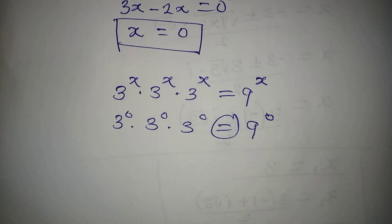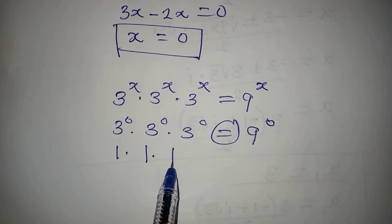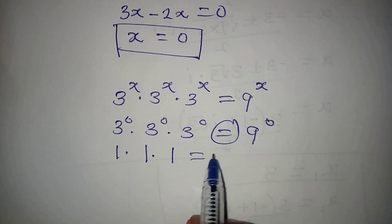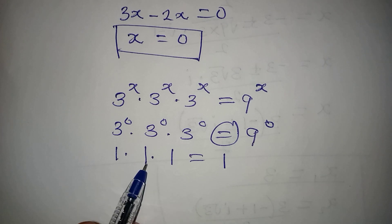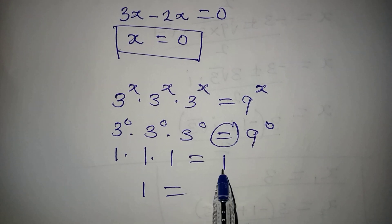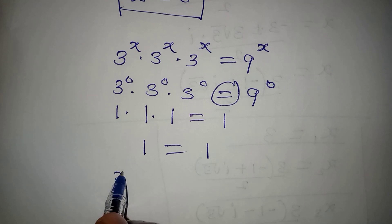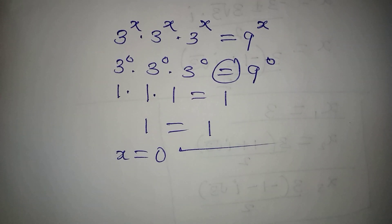Remember, 3 to the power of 0 is 1. So we have 1 times 1 times 1 on the left, and 9 to the power of 0 is also 1 on the right. Since 1 times 1 times 1 equals 1, and the right side is 1 as well, x equals 0 is correct. Thank you for watching.